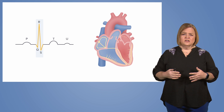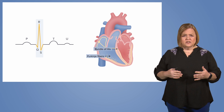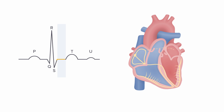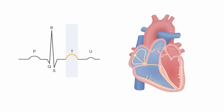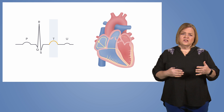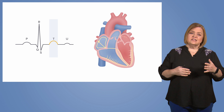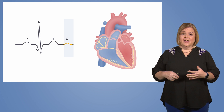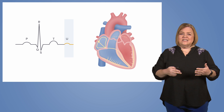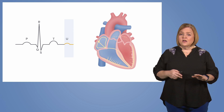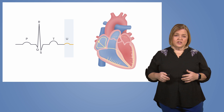Next, we have the QRS complex, which represents ventricular contraction caused by the migration of the impulse from the AV node to the Purkinje fibers. Then we see the T wave, caused by repolarization or relaxation of the ventricles. The interval between ventricular depolarization and repolarization is documented as the ST segment. Finally, we have the U wave, believed to be the product of delayed repolarization of the Purkinje fibers — though this wave may or may not be present on an ECG strip you are interpreting.